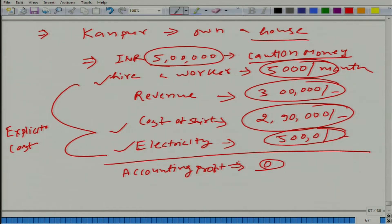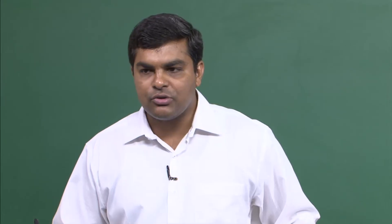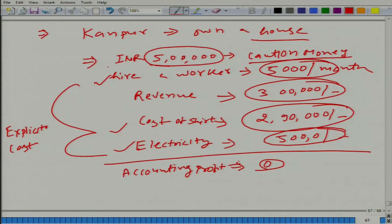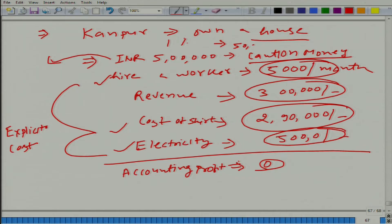But what we are missing is some of the implicit costs. You invested 5 lakh rupees in this business. Typically, you would earn a return on that — let us say 1 percent monthly. Then the implicit cost would be 5,000 rupees per month. So, taking that into account, your accounting profit becomes minus 5,000 rupees.